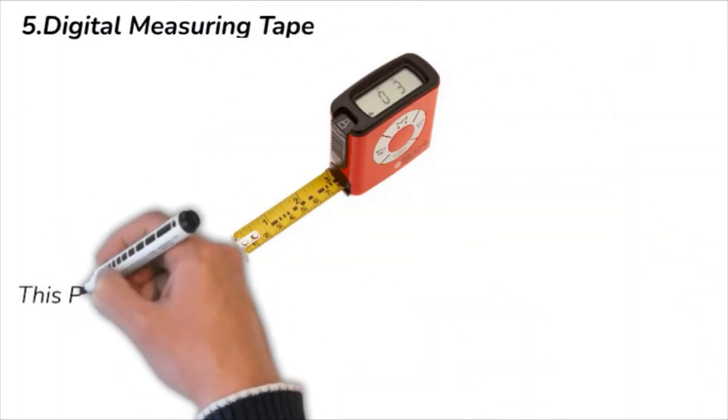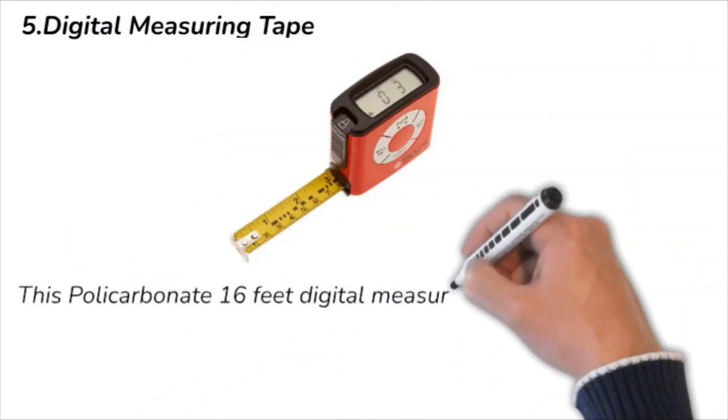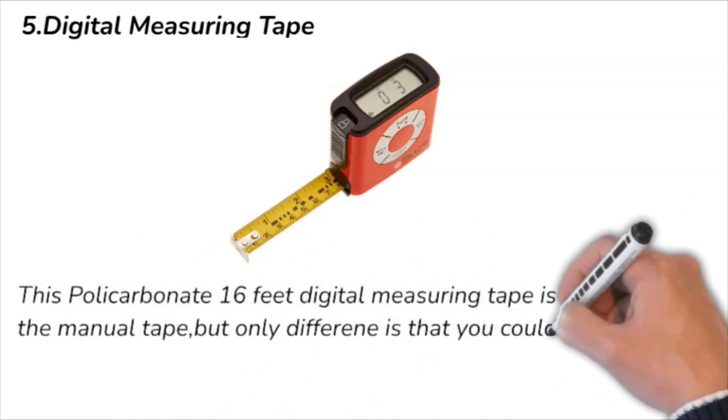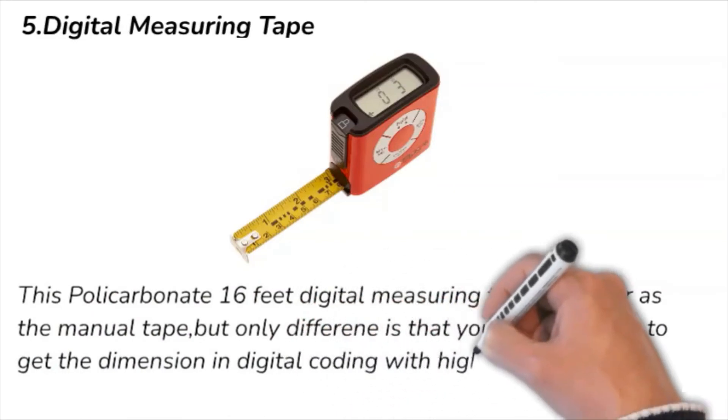Number five: Digital Measuring Tape. This polycarbonate 16 feet digital measuring tape is similar as the manual tape, but the only difference is that you could be able to get the dimensions in digital coding with higher accuracy.